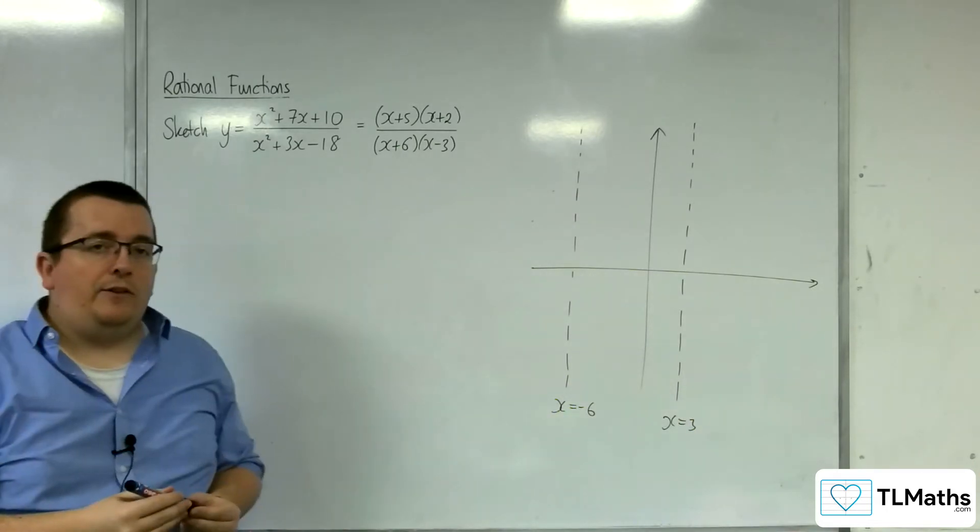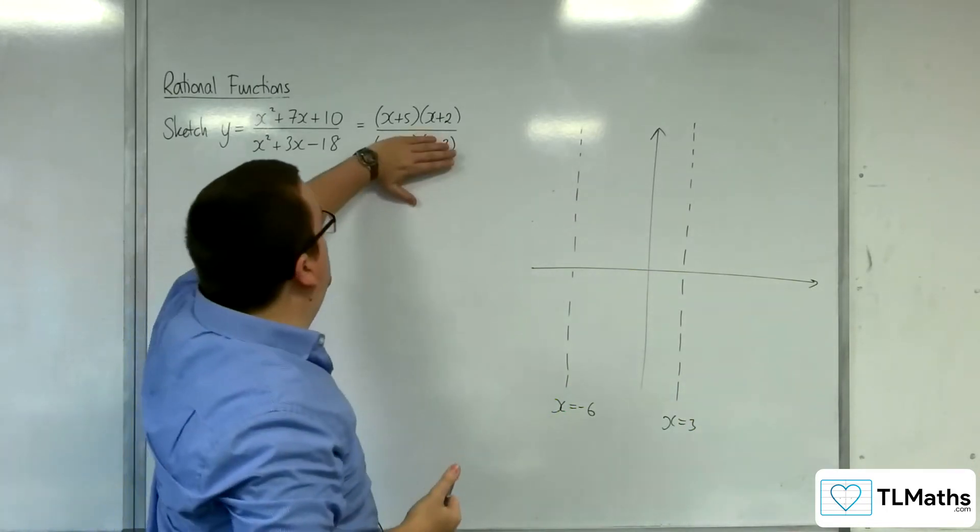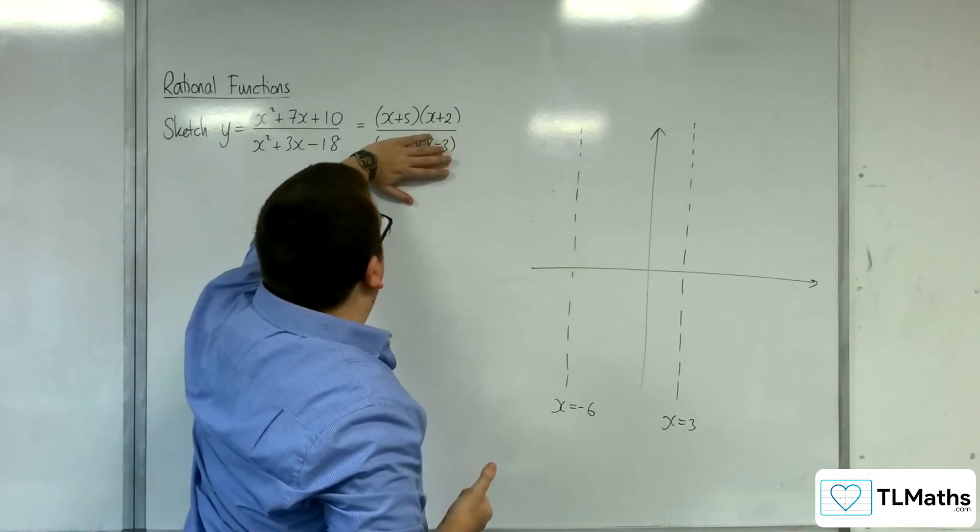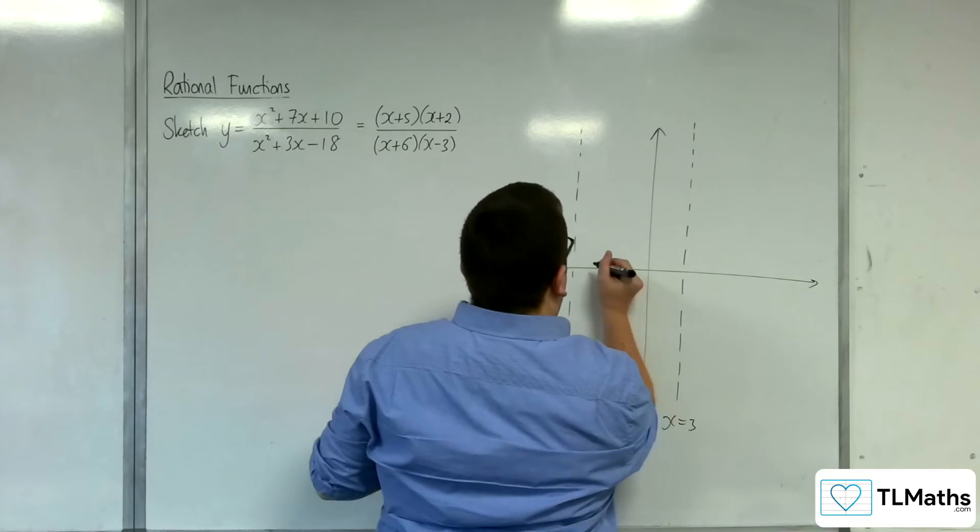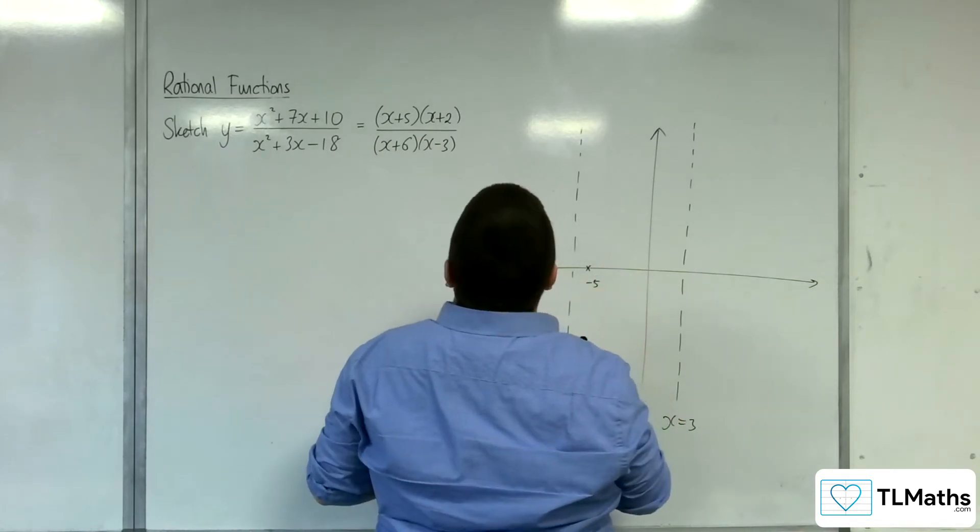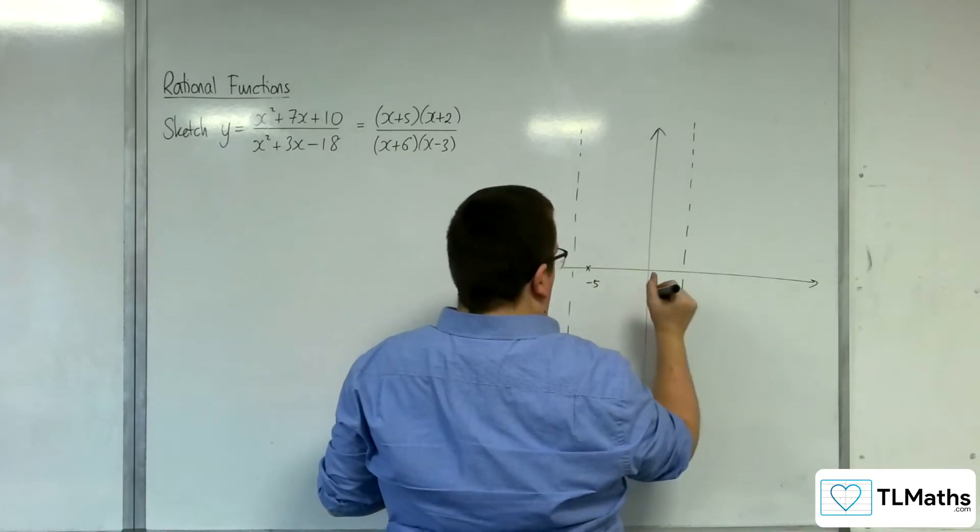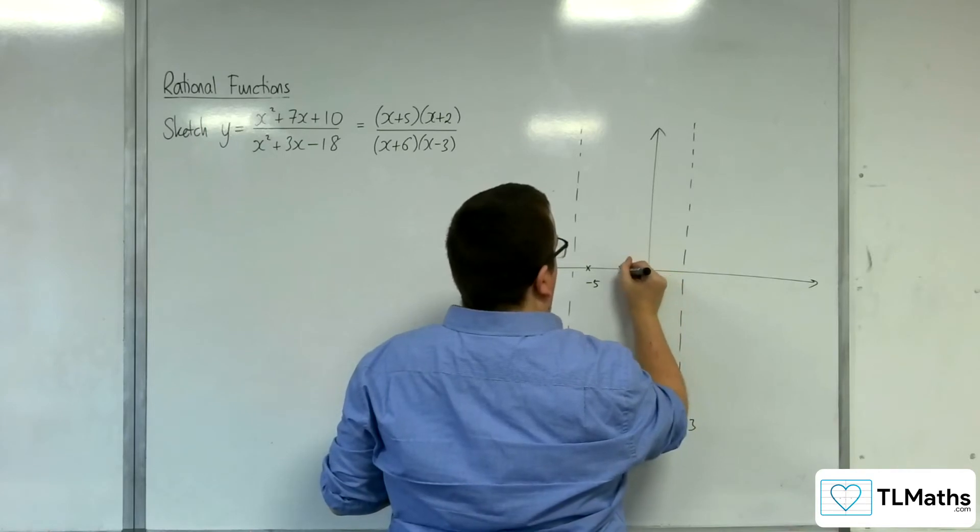Now, where is it crossing the x-axis? That's when y is 0, that's when the numerator is 0. So that would be at minus 5 and minus 2. So minus 5, somewhere there. And minus 2, which is going to be somewhere, let's pop that there.